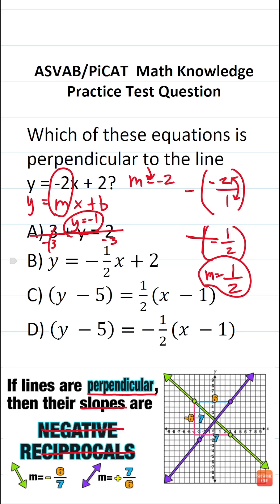We could see that in answer choice B, m is negative 1 half. So that is not a perpendicular line. Again, we're looking for an equation of a line where the slope is positive 1 half.